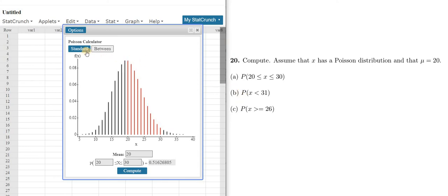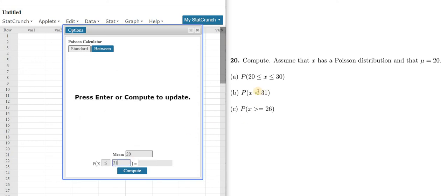OK, to do part B, we'll go back to Standard, and we'll enter 31. But now we have to pick the correct inequality symbol. So what you do is you left click here. It says the direction for the probability. So you click there, and then you go down to where it says less than, and then just click.